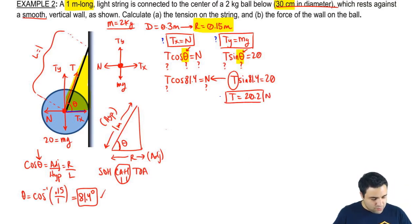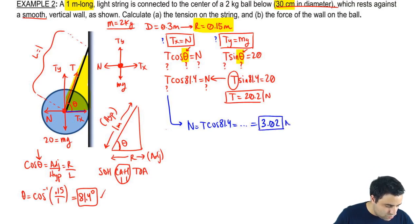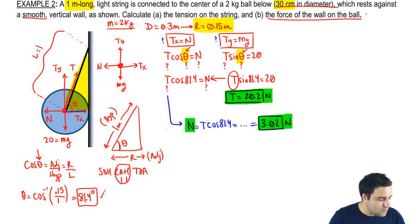Once I know T, I can go back in here to find N. N is T cosine of 81.4. And if you do this, you plug in these numbers in the calculator, you get that N is 3.02. And by the way, this is the answer to part A, which was asking for the tension of the string. And part B asked for the force of the wall on the ball. This is normal. So I got both answers by doing that.